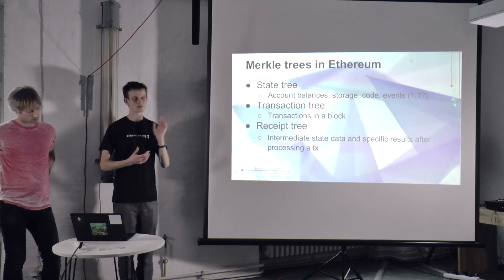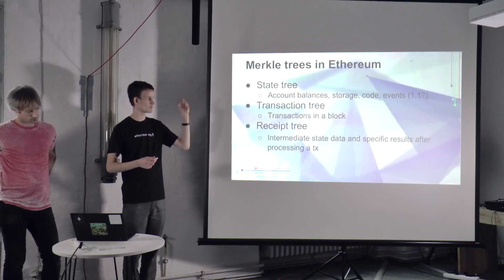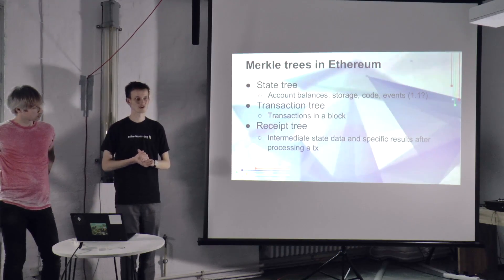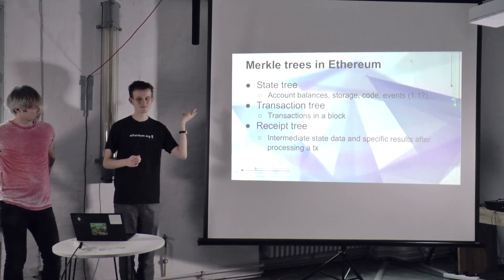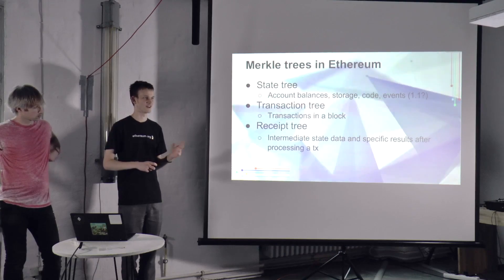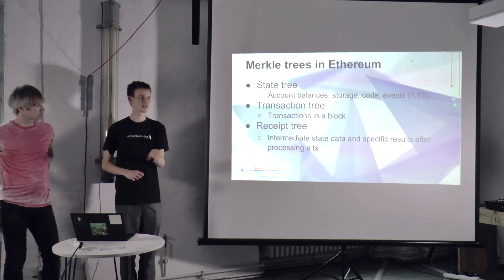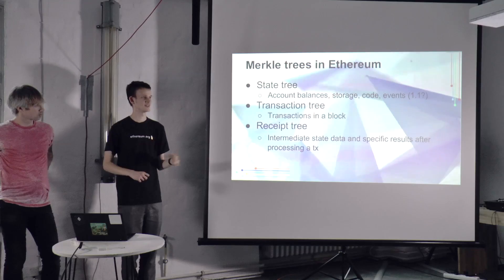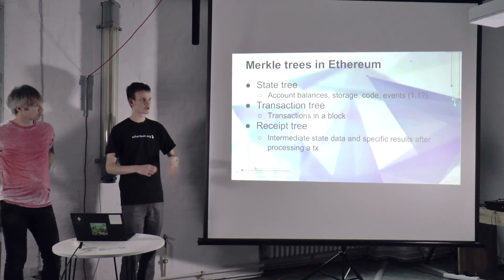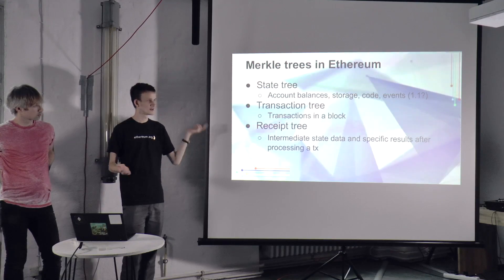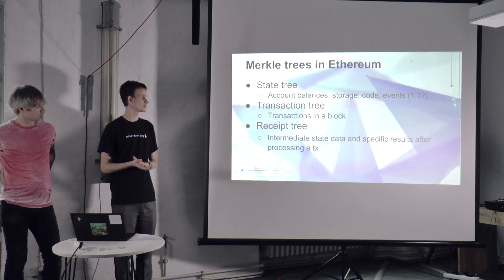So in Ethereum, we have three Merkle trees. We have a state tree — the state tree records account balances, storage, a little Merkle tree for each account, and code. In version 1.1, maybe we'll consider events, so a way for contracts to do events that only get propagated and processed in the future, and those events have to be stored in the state in the meantime. The transaction tree just stores all the transactions in the block. And the receipt tree — that's pretty important and we'll talk more about that later — the idea is it stores specific results related to processing each individual transaction.